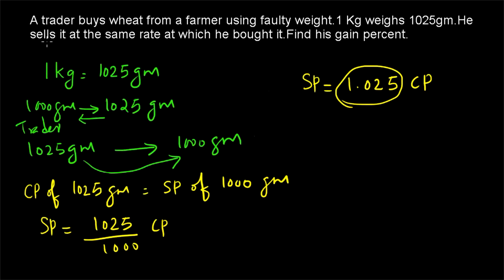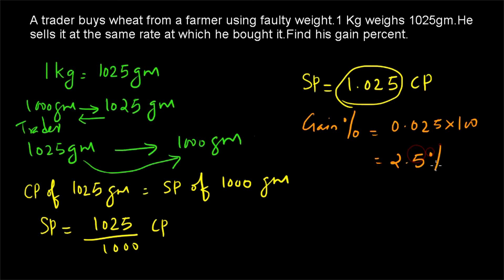From SP = 1.025 × CP, since it is greater than 1, we know it is a gain. The gain percentage is the decimal part 0.025 multiplied by 100, giving 2.5% gain. This problem is not an encouragement to do wrong things — using faulty meters or weights is cheating and is evil. We solved these problems so you can analyze such situations and identify the gain percentage being obtained dishonestly.